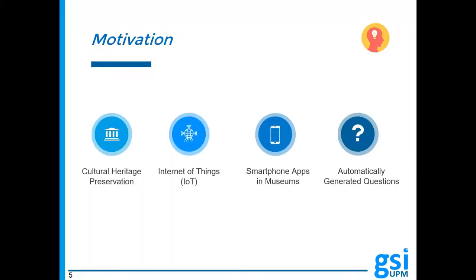There are four main reasons that motivated and encouraged us to design and develop this platform. One of them is the importance to preserve cultural heritage, because museums have become the cultural soul and conscience of nations. Another reason is that the emerging Internet of Things technology offers new ways to interact with displays of cultural heritage. Also, the use of smartphones in museums opens doors to different forms of tailoring museum experiences, for example by providing advanced visualization of exhibits, or using games and gamification techniques to pick visitors' interest. The fourth reason is tied to quiz games, which are typical examples in this area, and it would be very interesting to be able to generate these questions automatically, since this has not yet been contemplated in gamified museum environments.